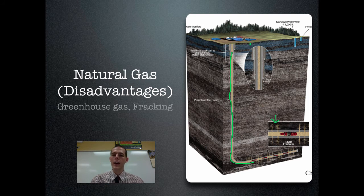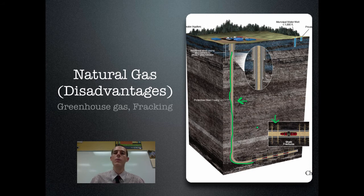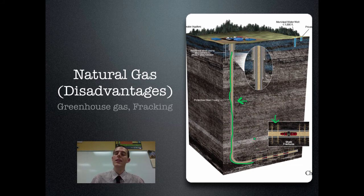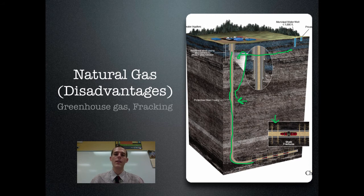The controversies around fracking: first, companies are not required to disclose what is in the fracking fluid being forced into the earth — conjecture includes benzene and other carcinogens. Even if they claim to recover all of it, inevitably not everything comes back out. There are also significant groundwater contamination problems — methane coming back up can end up in groundwater supplies, and there are videos of people literally lighting their tap water on fire because it contains so much methane.